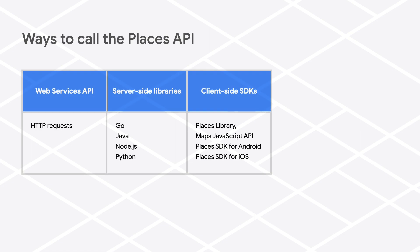You can use the business_status field immediately with HTTP requests to the Places API or through our various client libraries, including the client-side Places library in the Maps JavaScript API and server-side libraries for Go, Java, Node.js, and Python.